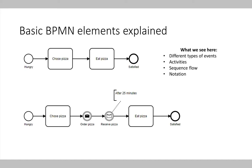For example, a start event, which is a simple circle, starts a process. We have a bold circle which is an end event — it ends a process. And we have events represented by two circles, which are intermediate events: something happening during the process execution. For example, a pizza is ordered or a pizza is received — those could be events in a process.